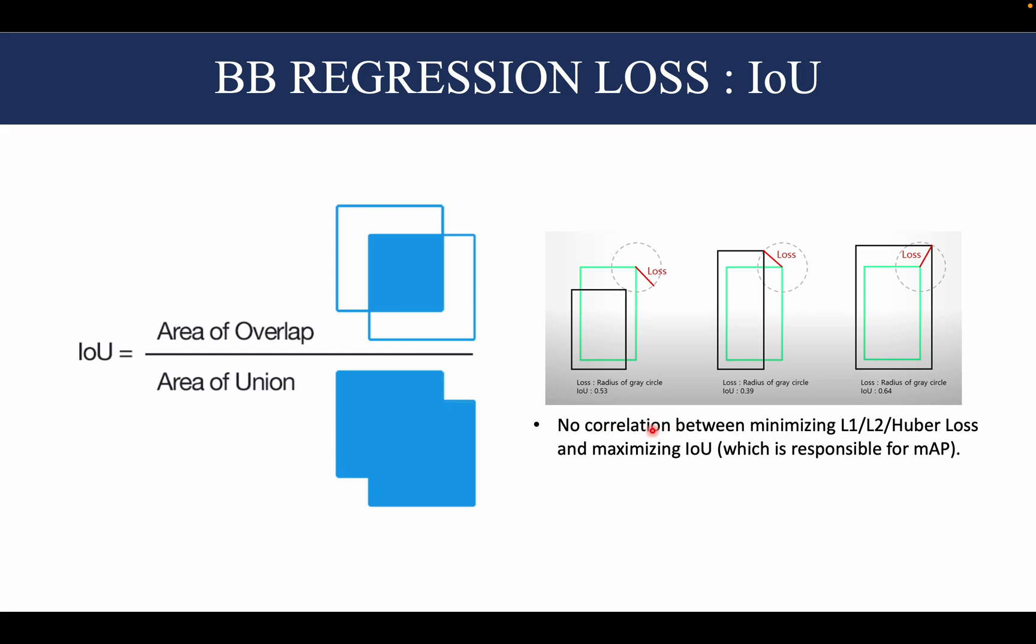So researchers thought, why not use the IoU for specifying the loss? This IoU loss was specified as 1 minus IoU. But what we now find is that for non-overlapping cases, the IoU would always be zero irrespective of the location of the two boxes. And therefore, there would be no gradient and no learning taking place.